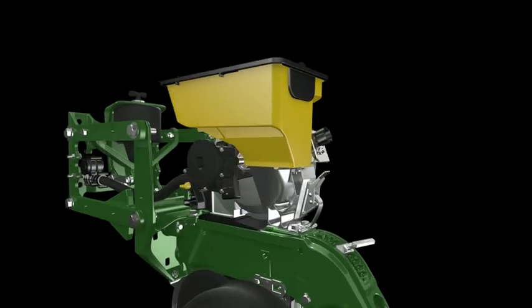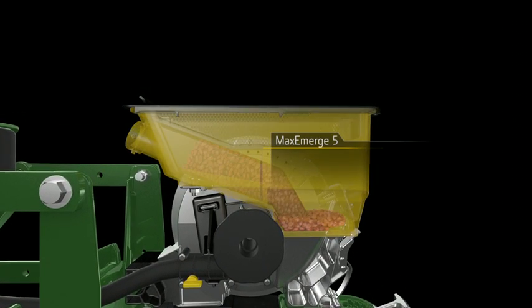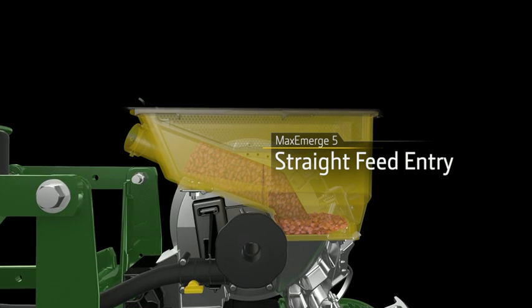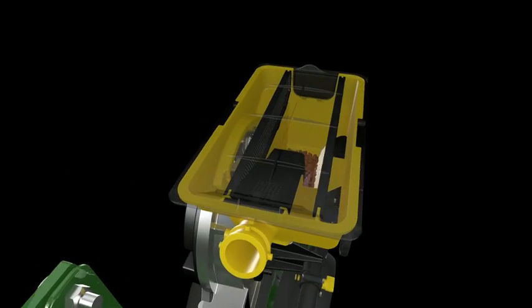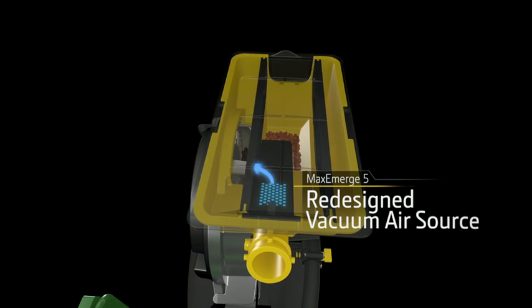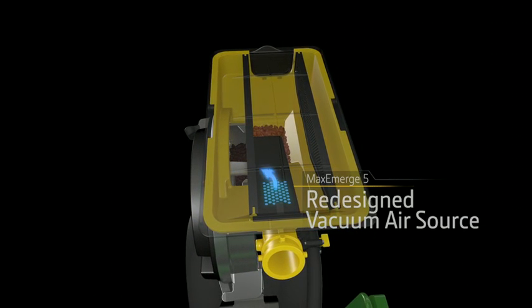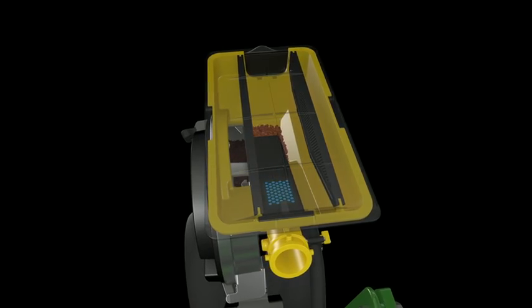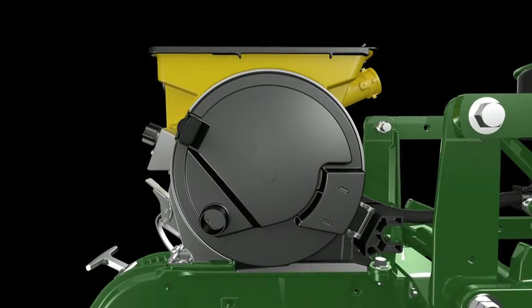It starts with our new mini hopper configuration. A reimagined straight feed entry from the CCS hose into the mini hopper gives you smooth continuous seed flow. And a redesigned vacuum air source pulls clean air from the CCS tank into the meter to keep it running free and clear of debris. Now that's greater efficiency right off the bat.